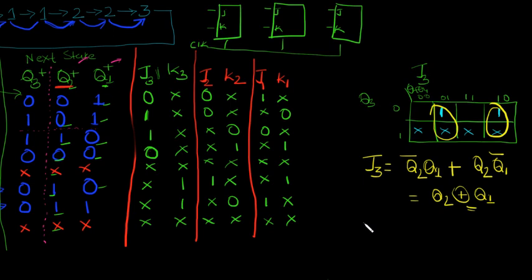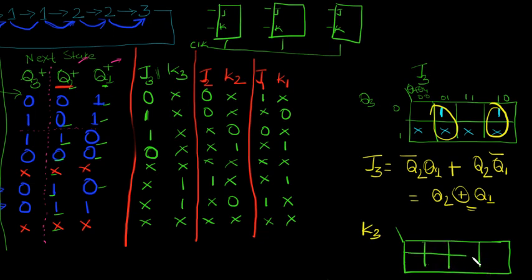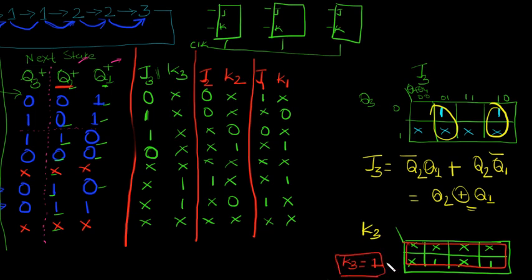Now solving for K3: looking at the K-map, the first 5 cells are don't care, then we have 1, 1 and more don't cares. Since everything groups together with don't cares included, K3 simplifies to simply 1. So J3 = Q2 XOR Q1 and K3 = 1.